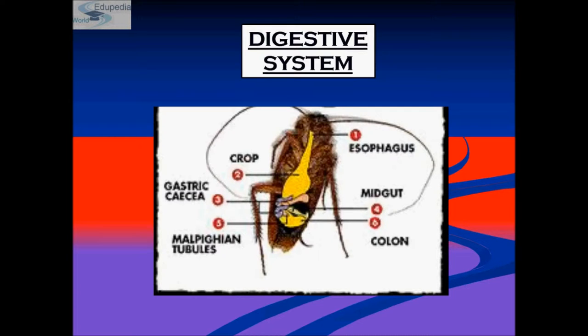Nutrition in cockroach is holozoic in nature and it is an omnivore which feeds on different kinds of organic matter. It takes in pieces of food and grinds them before digesting, so its mouth parts are modified for chewing. The digestive system includes mouth parts, a pair of salivary glands, and an alimentary canal.